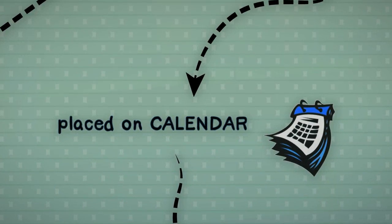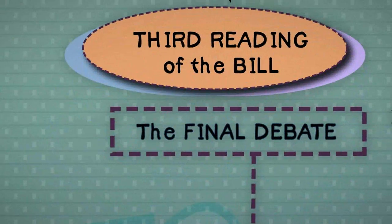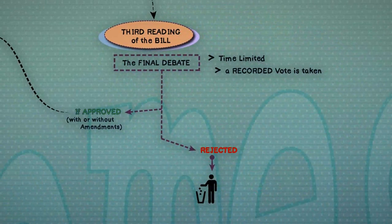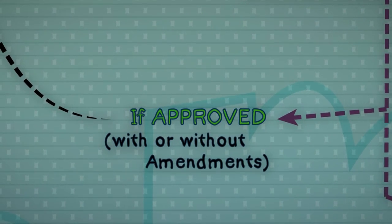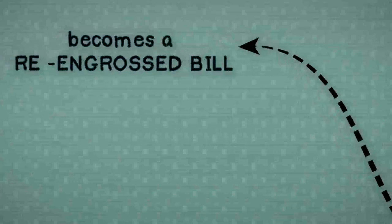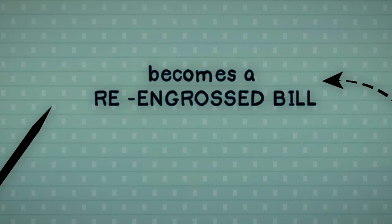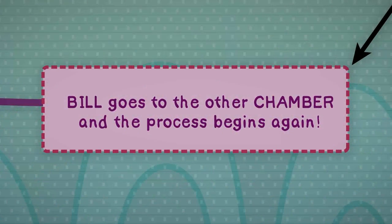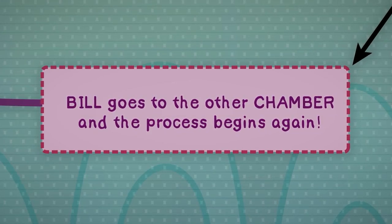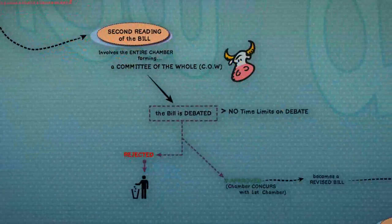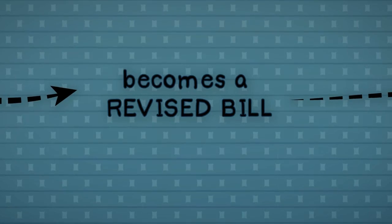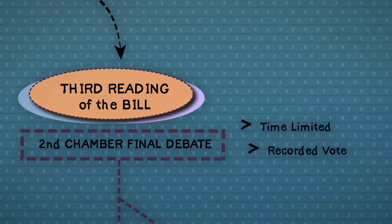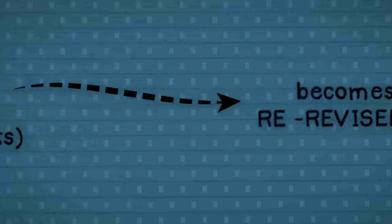That bill is then placed on the calendar for third reading. Third reading is where the final debate and recorded vote on the bill occurs. If the bill is approved by recorded vote, the engrossed bill and any approved third reading amendments are then combined into a re-engrossed bill. The bill then goes to the other chamber, where the same process starts all over again. When and if the second chamber approves the bill on second reading, it then becomes a revised bill. If the bill makes it all the way through the third reading in the second chamber, it becomes a re-revised bill and is sent back to the first chamber, where any amendments made by the other chamber must be approved.